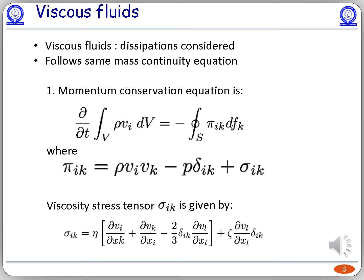In viscous fluid models, the non-dissipation assumptions of ideal fluids are relaxed. Viscous fluids also follow the same mass continuity equation as ideal fluids. The momentum conservation equation is slightly changed: in the momentum flux density tensor, one more term is added — the viscosity stress tensor sigma_ik, whose expression is given in the slide. One interesting fact about the viscosity stress tensor is that the terms in the square bracket vanish when i and k are contracted, and the coefficient of zeta, which is del v_l by del x_l, vanishes for an incompressible fluid. Here eta and zeta are the first and second coefficients of viscosity.